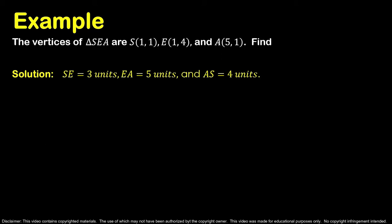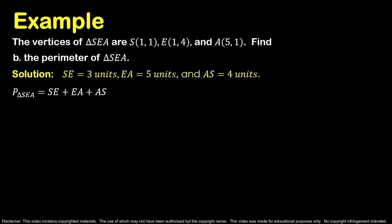Next, let us determine the perimeter of triangle SEA. Recall that the perimeter is the distance around a two-dimensional shape, equal to the sum of the lengths of all its sides. The perimeter of triangle SEA is SE plus EA plus AS. Substituting: 3 plus 5 plus 4 equals 12. Therefore, the perimeter of triangle SEA is 12 units.